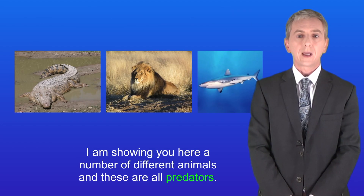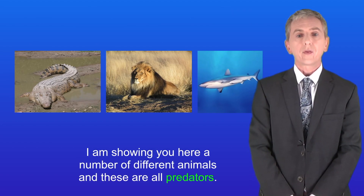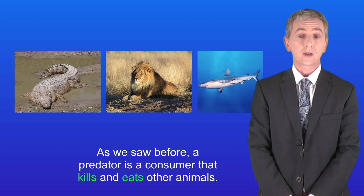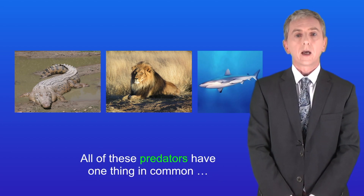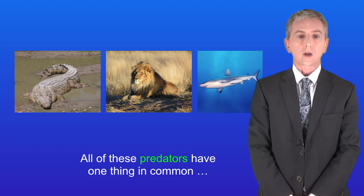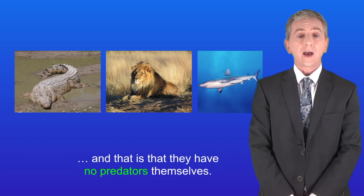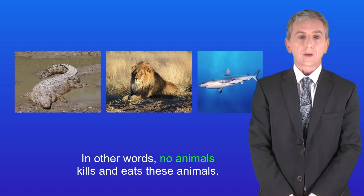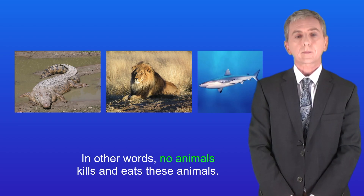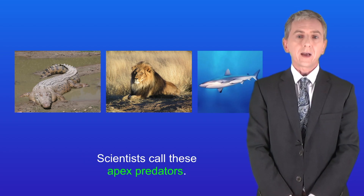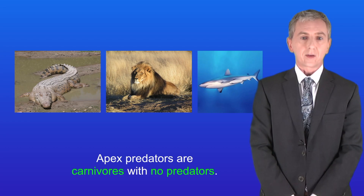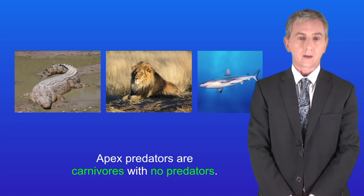Here are a number of different animals — these are all predators. As we saw before, a predator is a consumer that kills and eats other animals. All of these predators have one thing in common: they have no predators themselves. In other words, no animal kills and eats these animals. Scientists call these apex predators — carnivores with no predators.